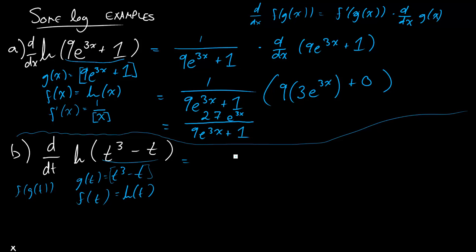And so the first step is going to be, well, what would the derivative of that outer function be? Well, it would be 1 over the inner function, just like above, right? So 1 over t cubed minus t. So this is the part I'm writing here.